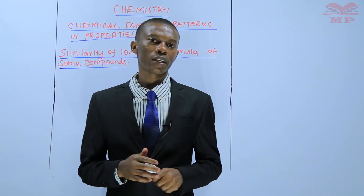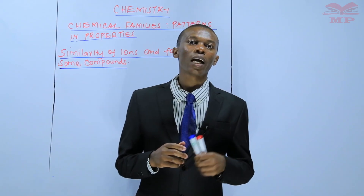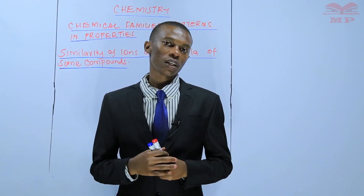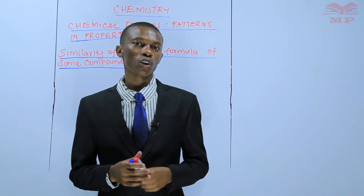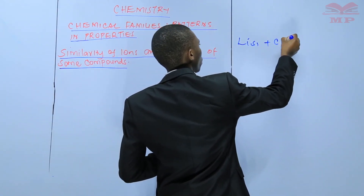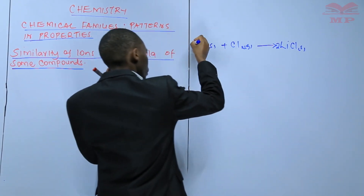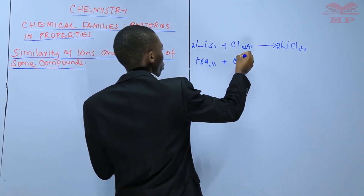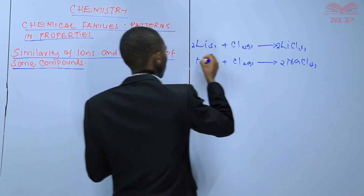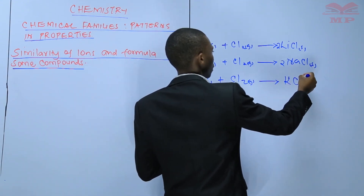In the previous lesson we were discussing the chemical properties, or the reaction between alkali metals and chlorine gas. Alkali metals react with chlorine leading to formation of chlorides. Lithium reacts with chlorine leading to formation of lithium chloride. Sodium reacts with chlorine gas leading to formation of sodium chloride. And potassium reacts with chlorine gas leading to formation of potassium chloride.